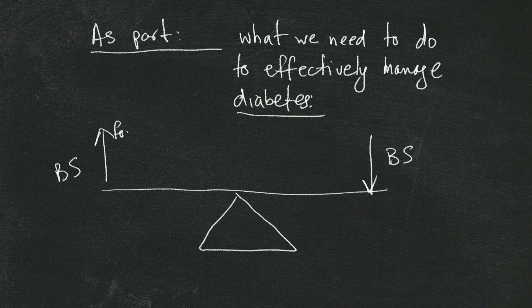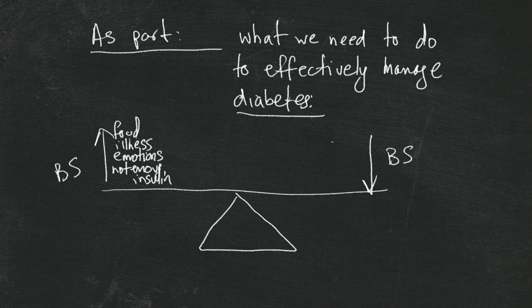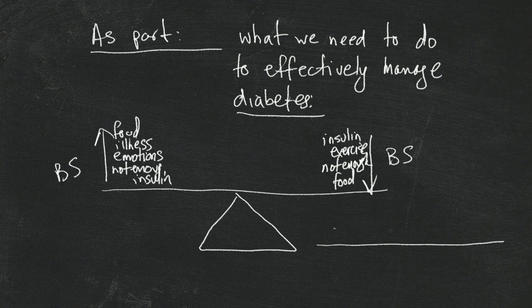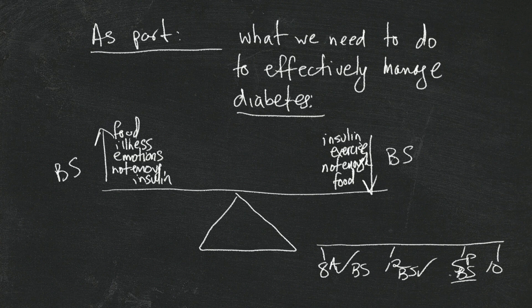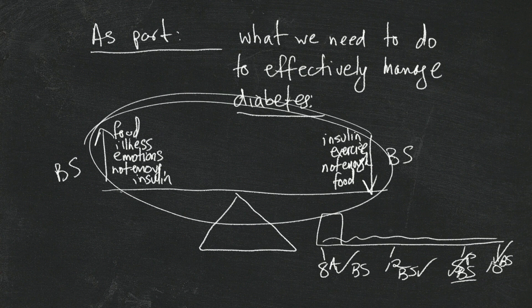Things that make your blood sugar go up are food, illness, emotions — if you really get angry — and not enough insulin. Things that make your blood sugar go down are the opposite: insulin, exercise, and not enough food. What we need to learn is how to take into consideration those variables, check our blood sugars at critical times during the day — more often at first — and get a sense of how much insulin we need to take. There are some pretty simple guiding principles that underlie and inform all of what we do around diabetes management.